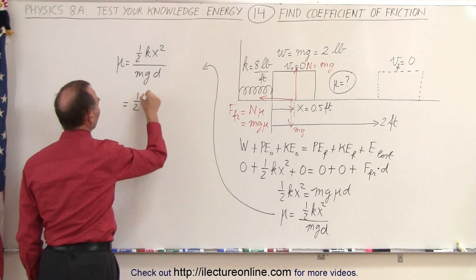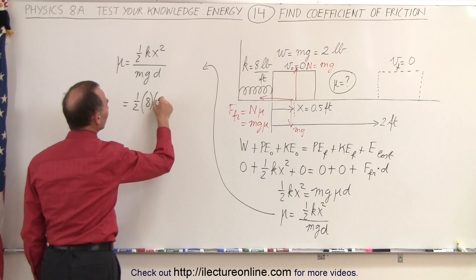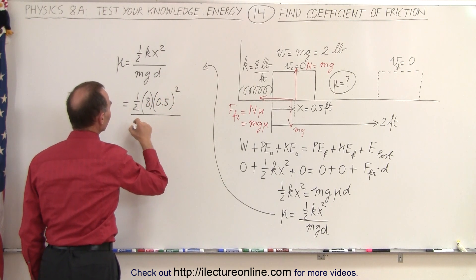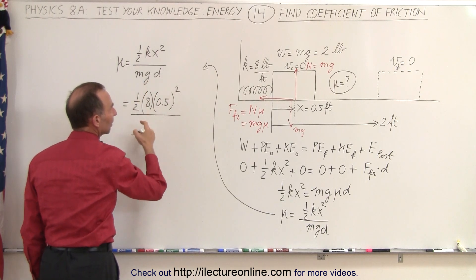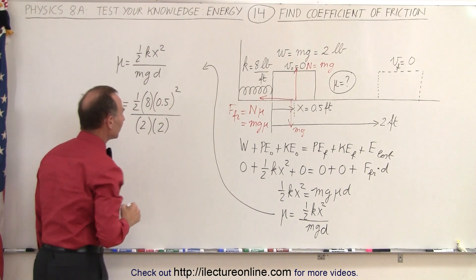That would be one half times k, which is eight times the distance, which is 0.5. We have to square that divided by the mass times the acceleration of gravity, which is two pounds times the distance, which is a total of two feet.